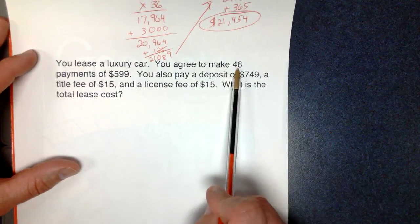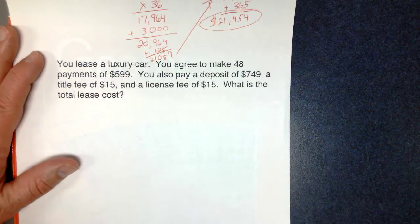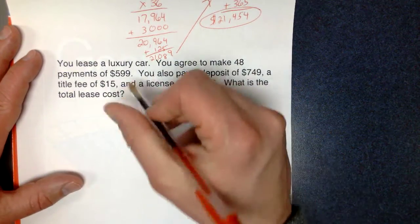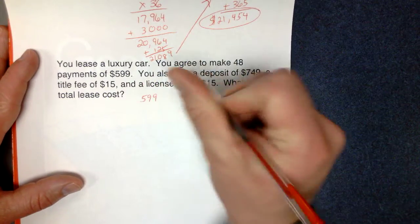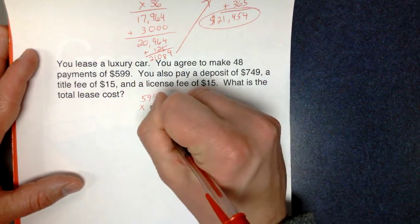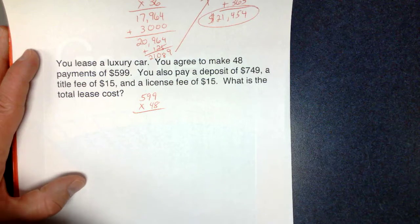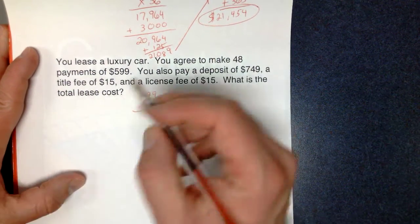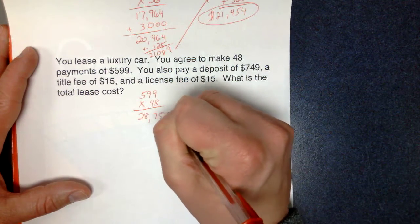We've got a luxury car. This time we're going to do 48 months, payments of $599 each month. And then we've got our fees on here. So let's start with that $599 a month. We're going to do it for 48 months. And if I multiply that out, it's $28,752.